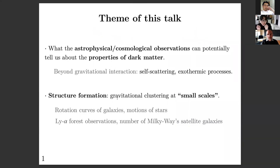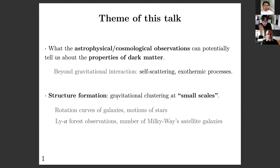Before diving into the contents, I'd like to outline the theme of this talk. The main motivation is thinking about what astrophysical or cosmological observations can potentially tell us about the actual properties of dark matter — specifically, dark matter interactions among themselves beyond gravitational ones, such as elastic self-scattering and exothermic scatterings. Those interactions are secluded from the Standard Model, and may be most directly probed by looking at their imprints in structure formation on small scales.